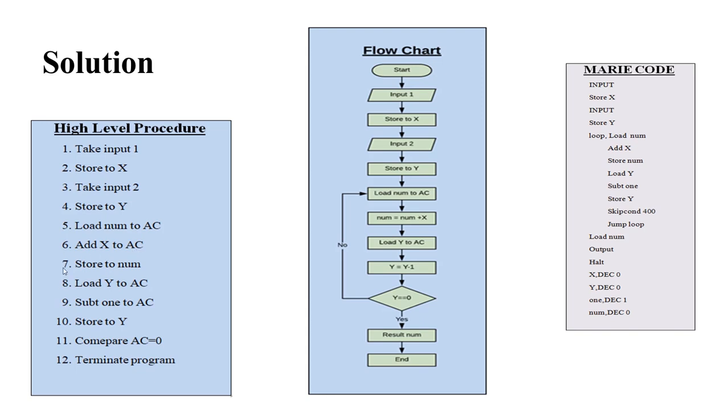Number 7: Then we store value in AC to num. Number 8: Next, insert y into AC. Number 9: Extract 1 from AC, because we already added 1x to the result num. Number 10: Store the AC to y. At this moment its value is y minus 1.